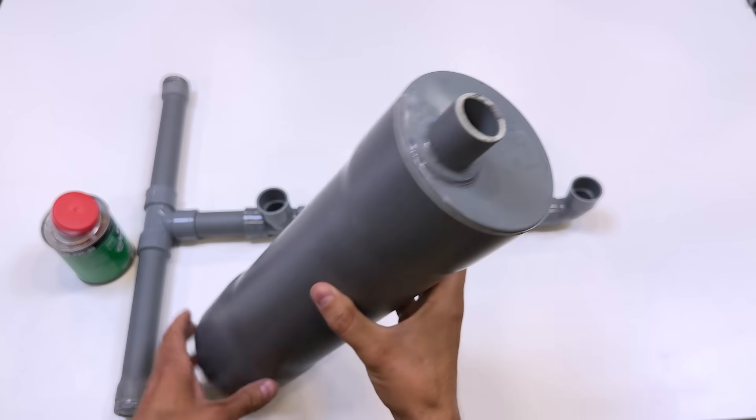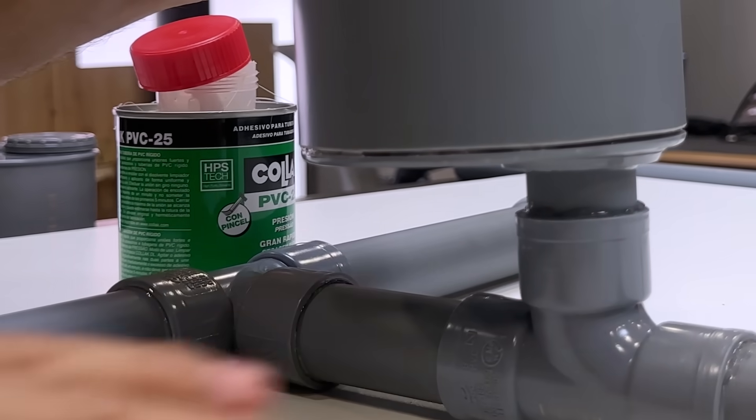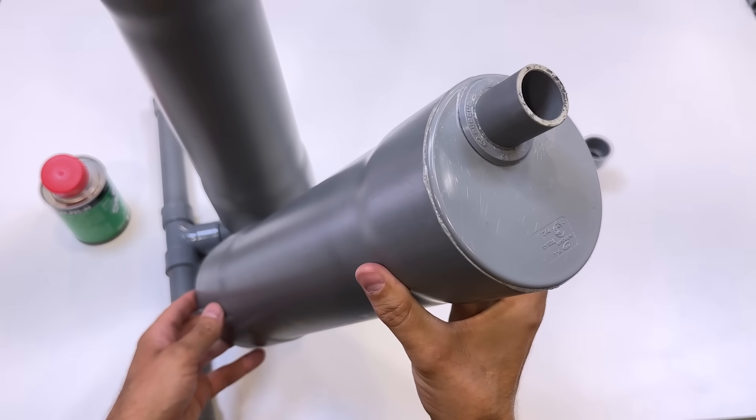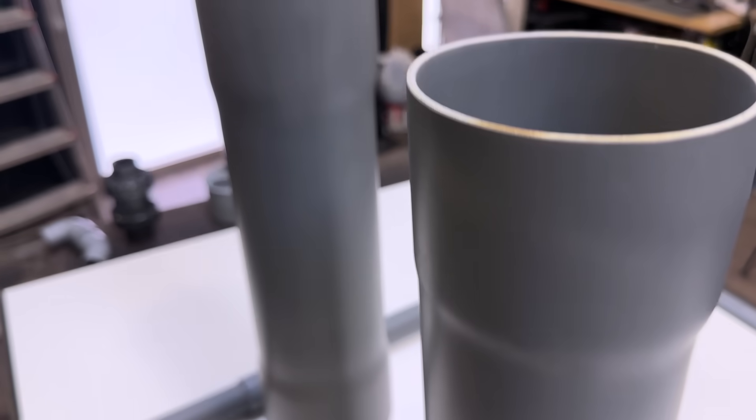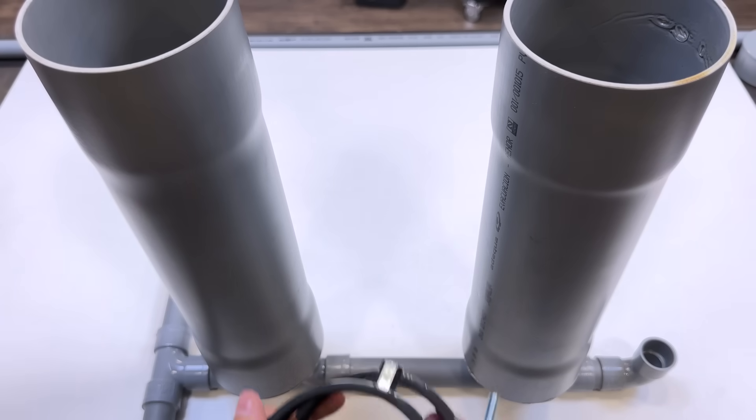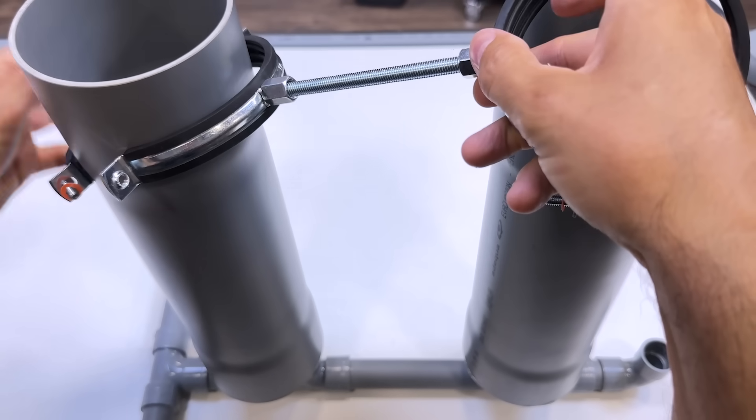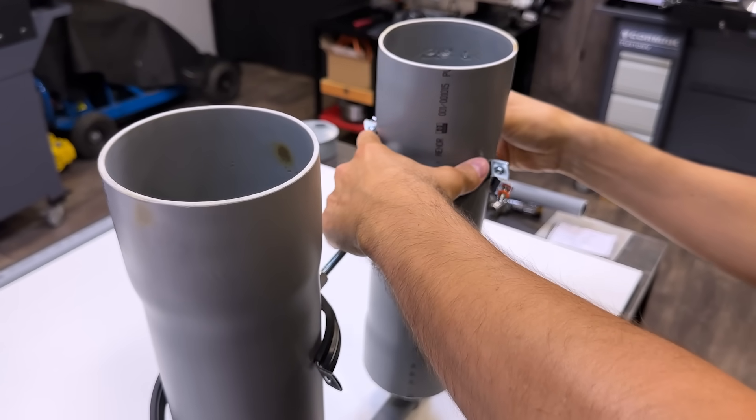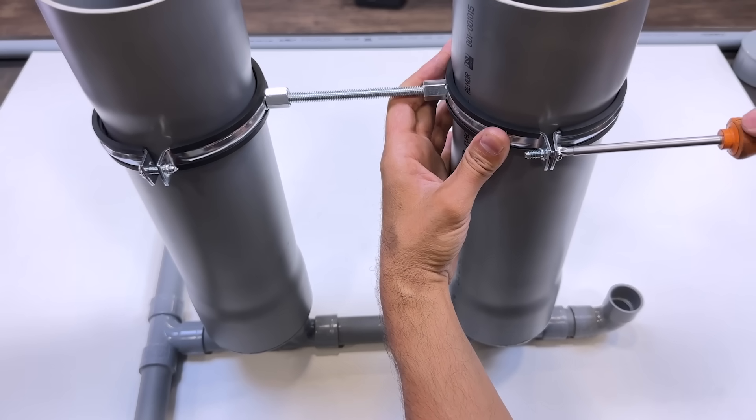We will now proceed to place the two thicker tubes that will serve as the main tanks. With these clamps and this spacer, we will secure the tanks to give the system greater rigidity. The tanks must be completely vertical to enhance the recurrent boost in self-regulation of pressure.